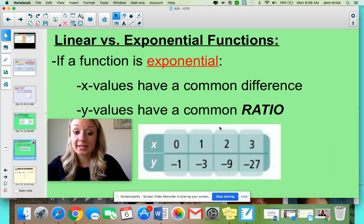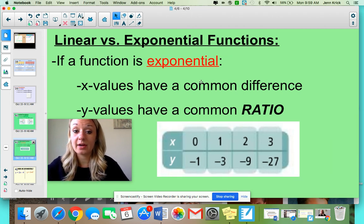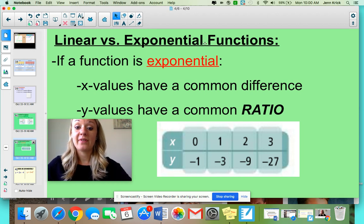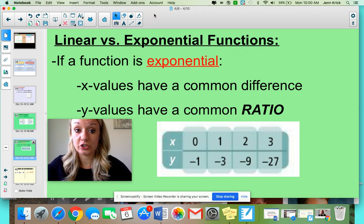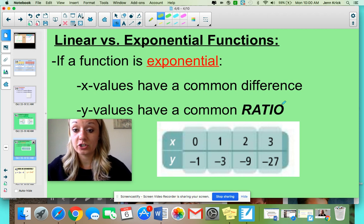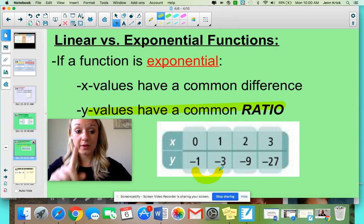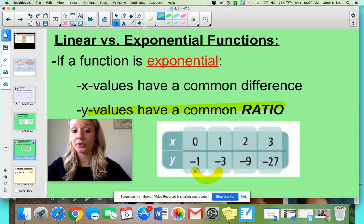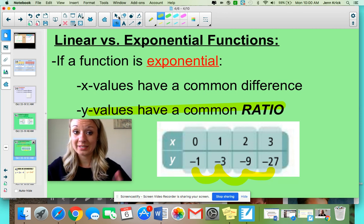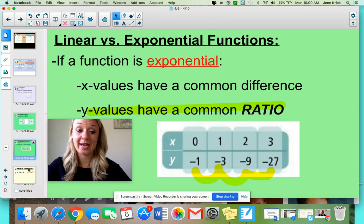If we're looking at tables, remember that your x values still have a common difference. They're still going up or down by the same amount. Your y values have a common ratio. Common ratio. That is so important. So if you're looking at your y's, are they being added by the same amount or are they being multiplied? And I can tell that each of these, I know I'm multiplying by three. Multiply by three. Multiply by three. Because I'm multiplying, that's got to be exponential.